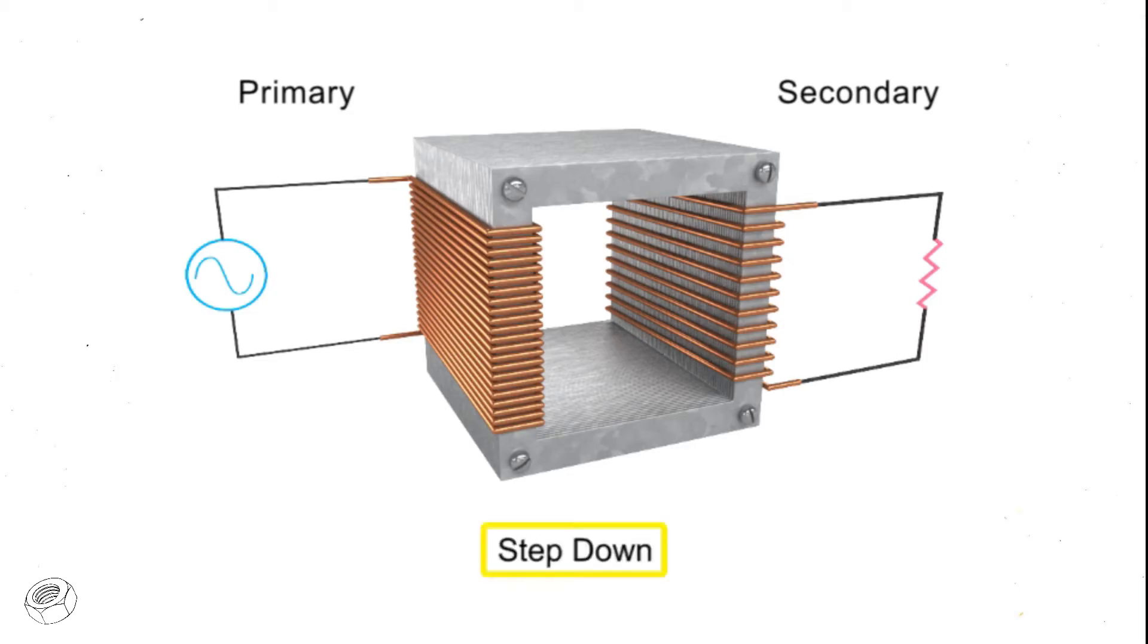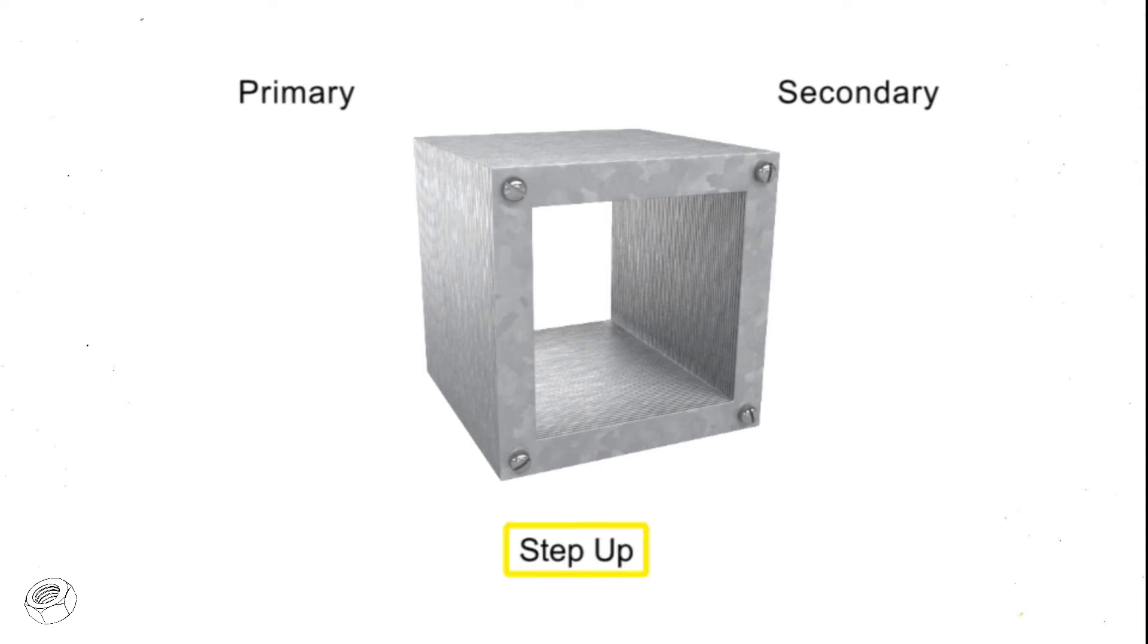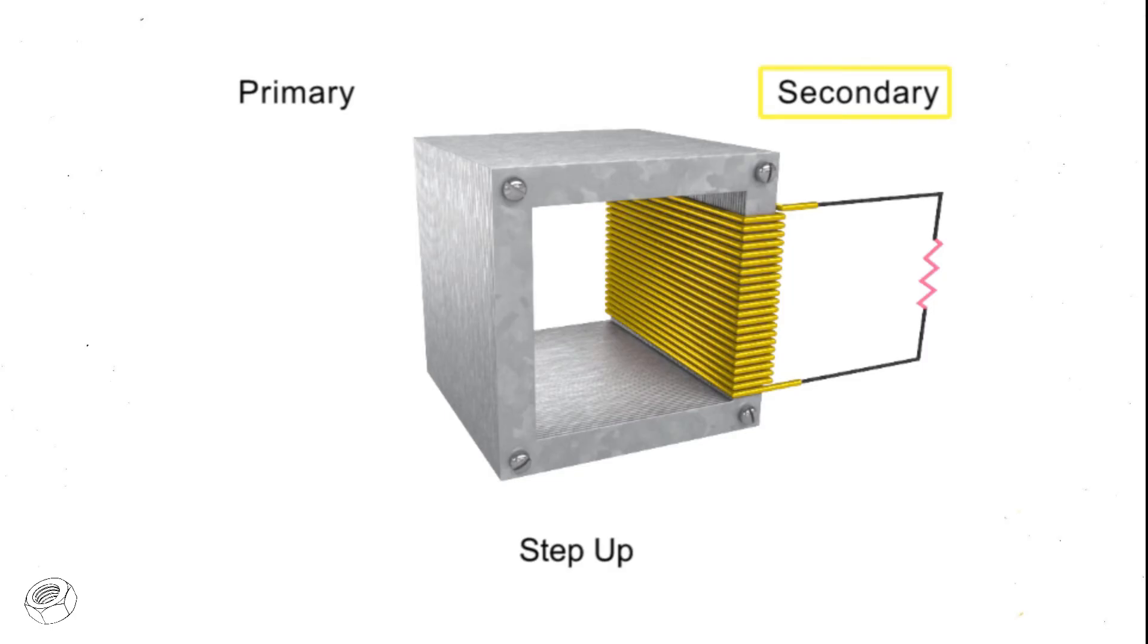In a step-down transformer, the number of turns in the primary coil is greater than the number of turns in the secondary coil. In a step-up transformer, the number of turns in the secondary coil is greater than the number of turns in the primary coil.